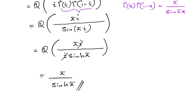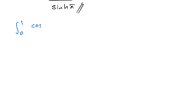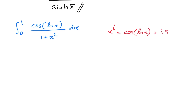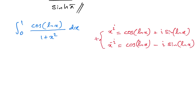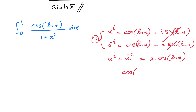Now let's evaluate the second integral: from 0 to 1 of cosine of natural log of x over (1 plus x squared) dx. We know x to the i equals cosine(ln x) plus i·sin(ln x), and x to the minus i equals cosine(ln x) minus i·sin(ln x). Adding these two equations gives x to the i plus x to the minus i equals 2·cosine(ln x), so cosine(ln x) equals (x to the i plus x to the minus i) over 2.